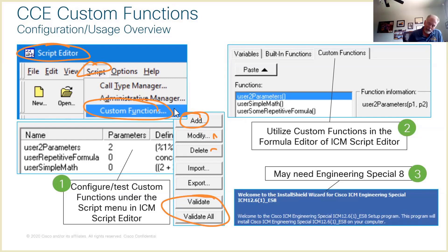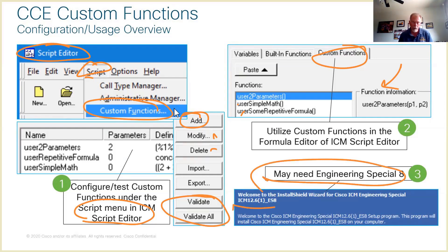We'll also talk about the validate feature here in custom functions. We're going to build and test them under the Script menu in Script Editor, then use those custom functions within scripting in the formula editor. Engineering Special 8 is for ICM 12.6.1, and remember those engineering specials are at a different URL location than your regular update or upgrade feature sets for software.